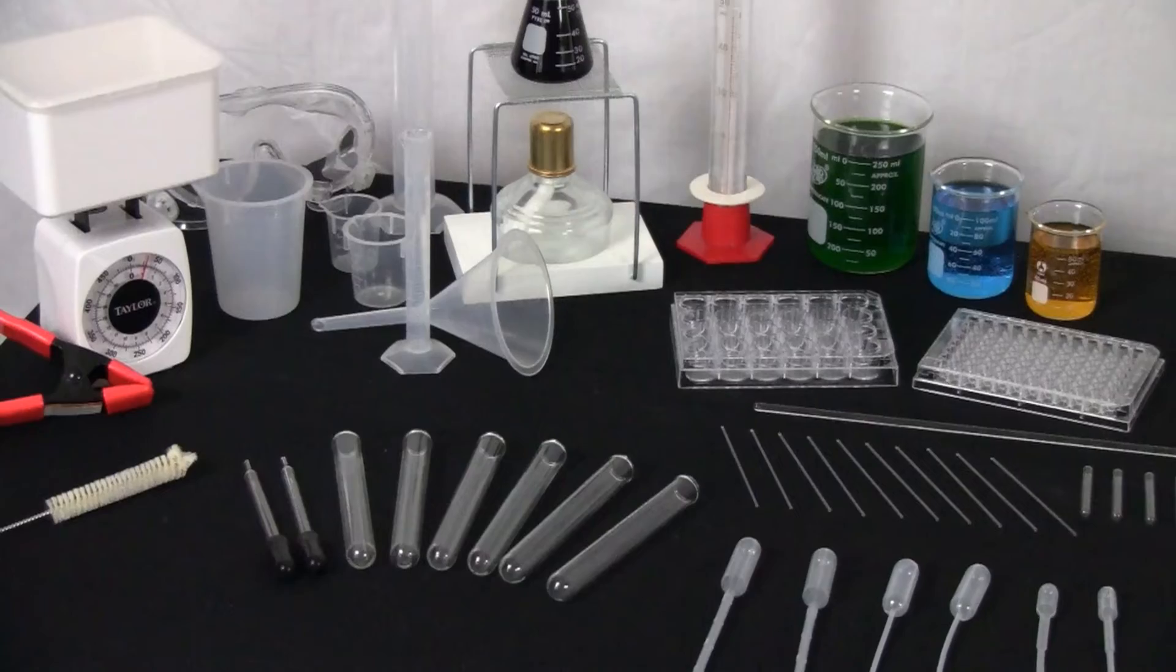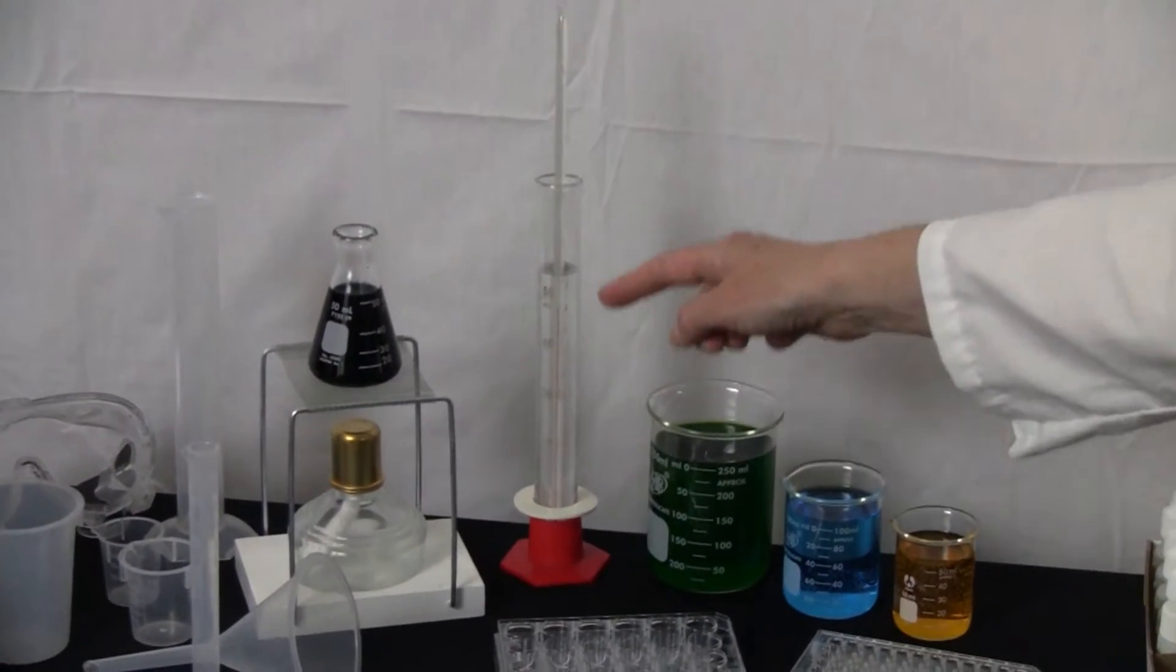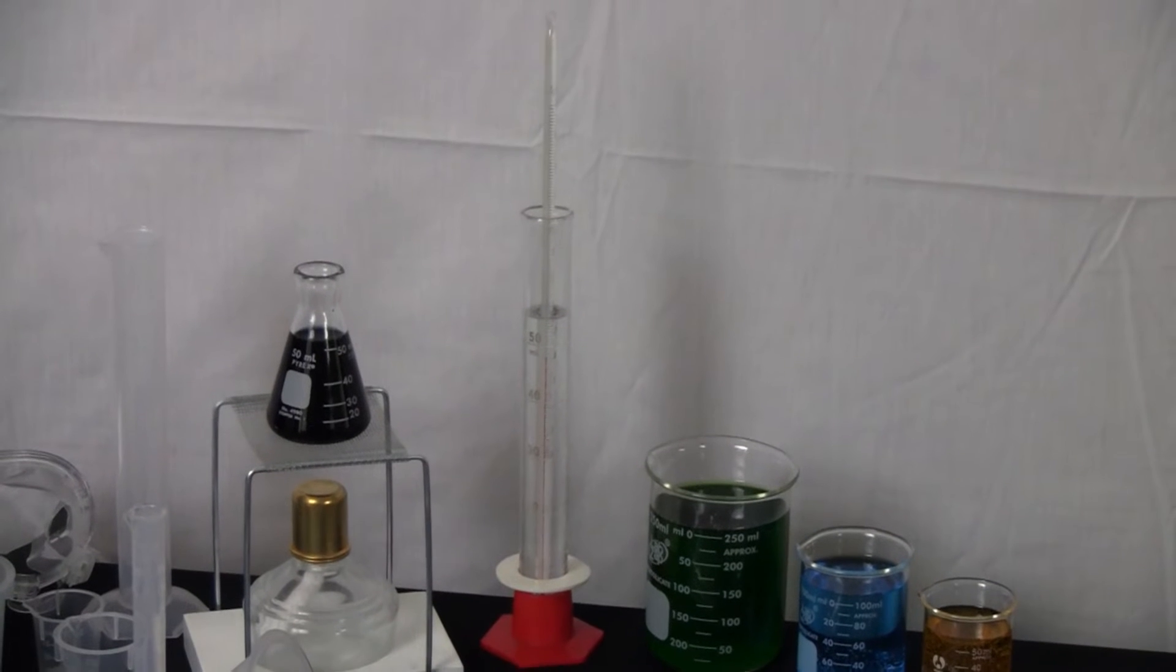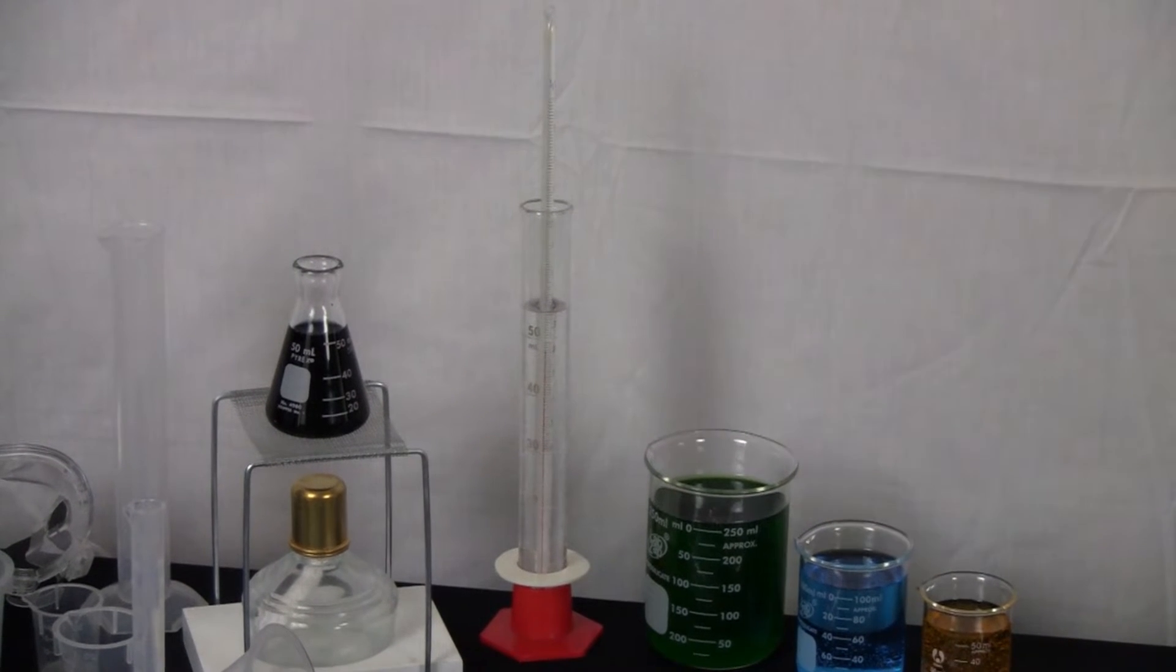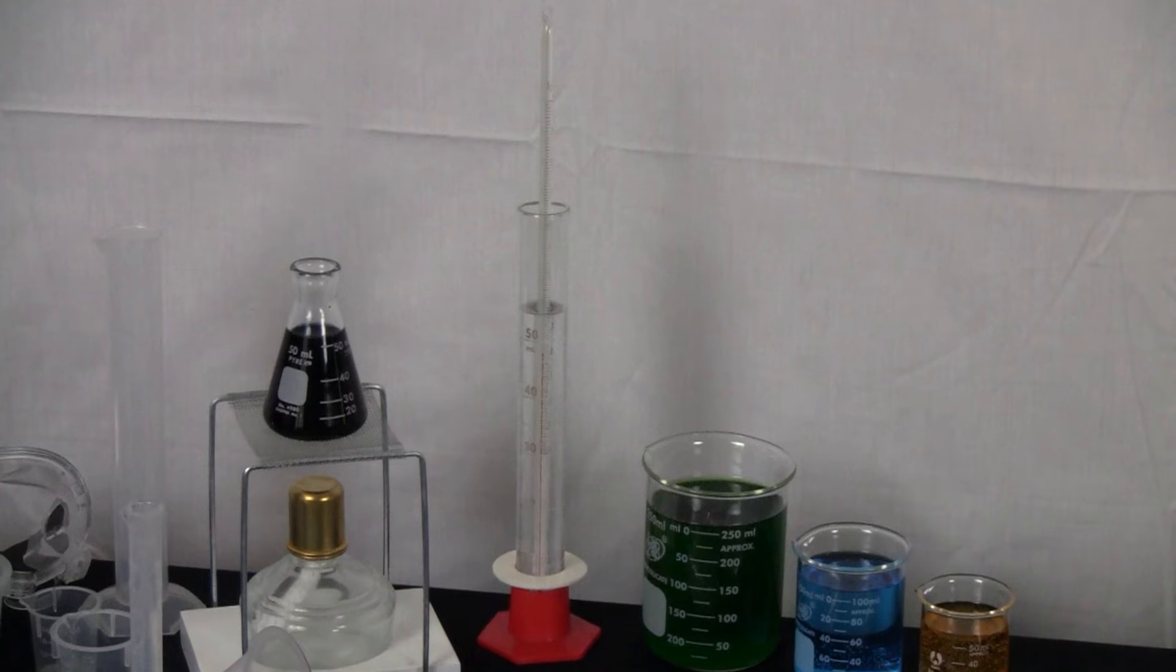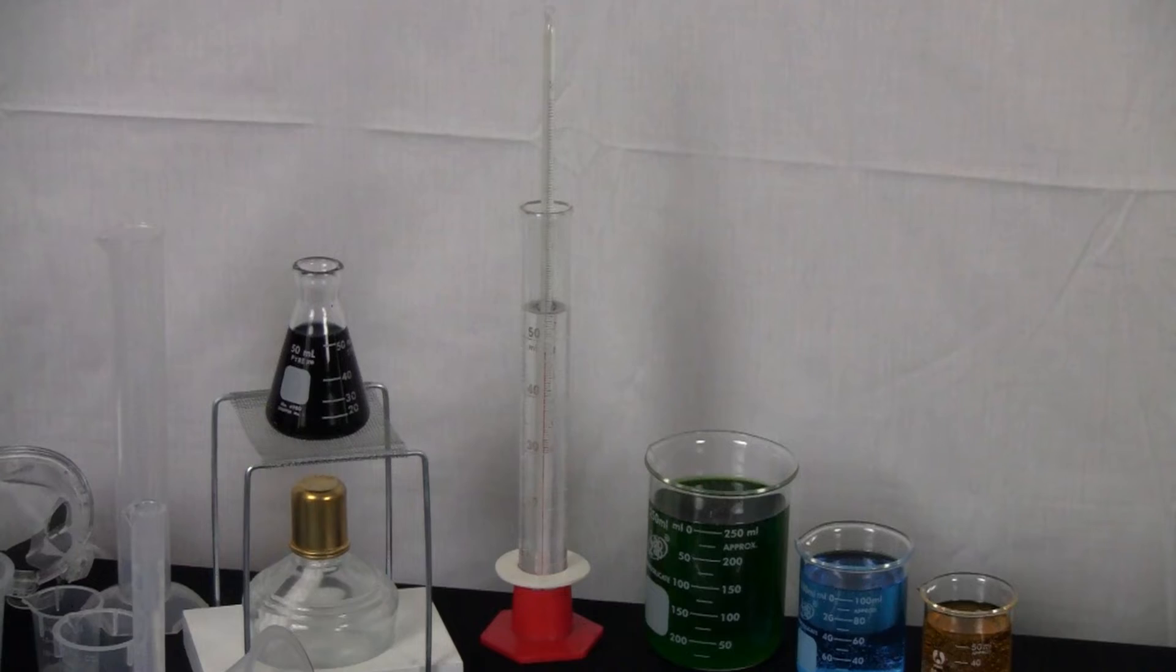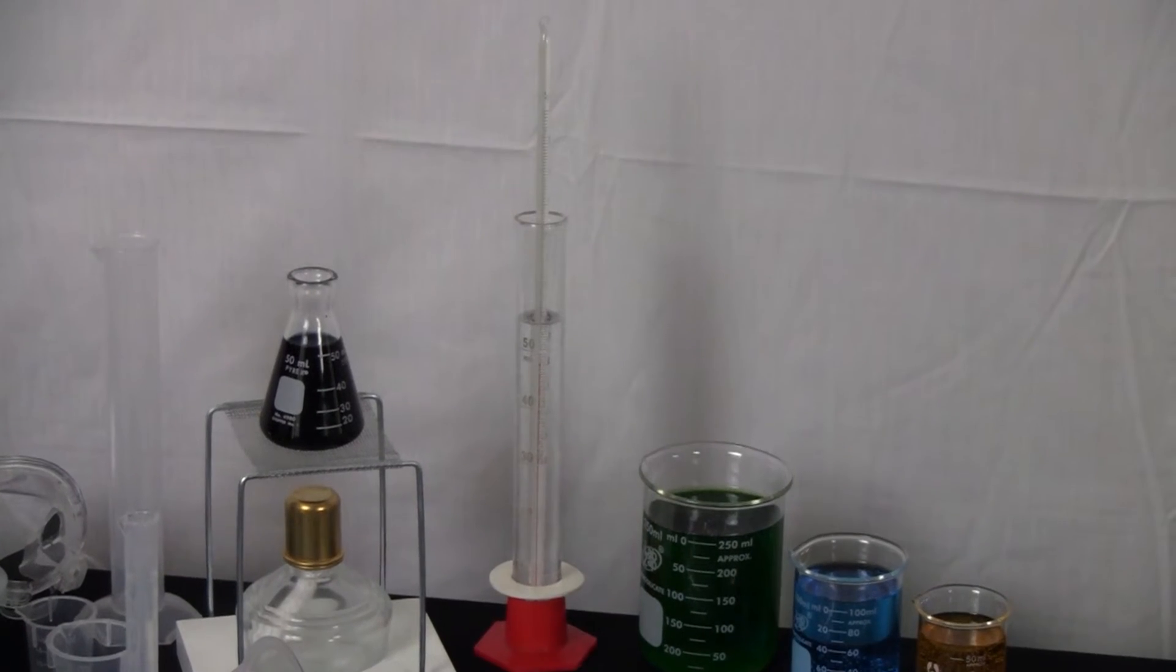Now we have graduated cylinders. This graduated cylinder right here is a long, thin cylinder, and it's similar to a measuring cup. It's more accurate on the sides. You have the different slashes to find out how much liquid you have in it. And so, this is used also for measuring liquids.